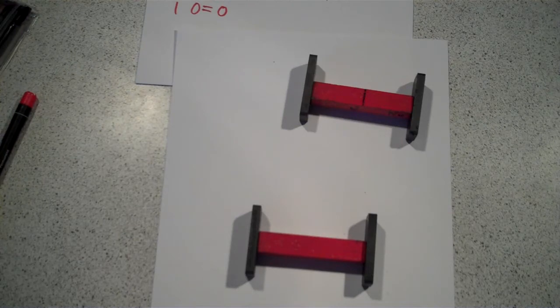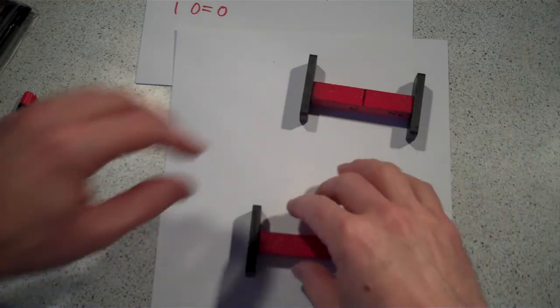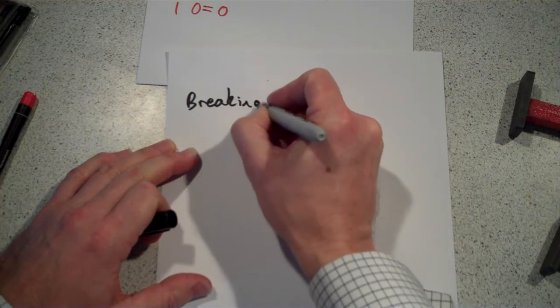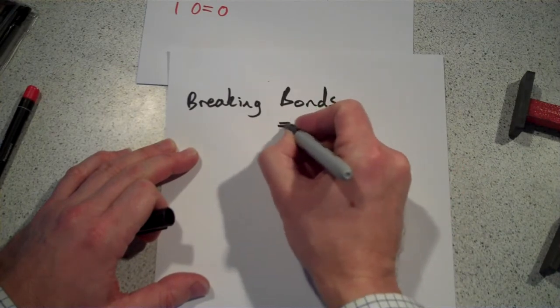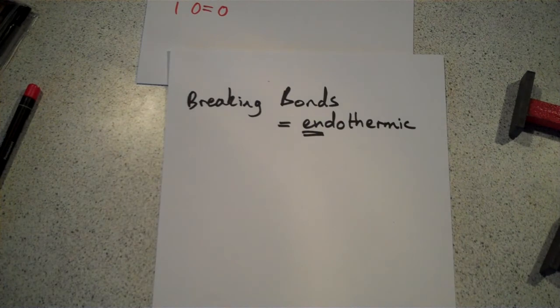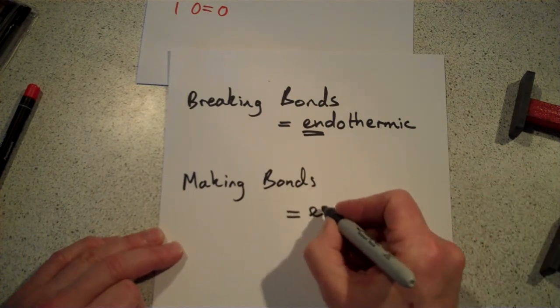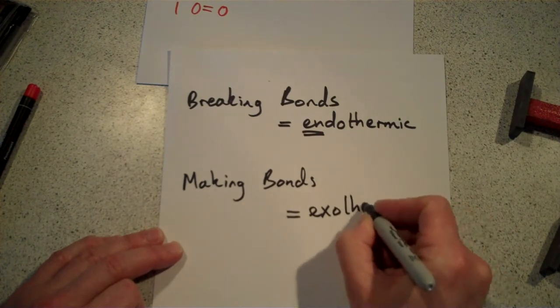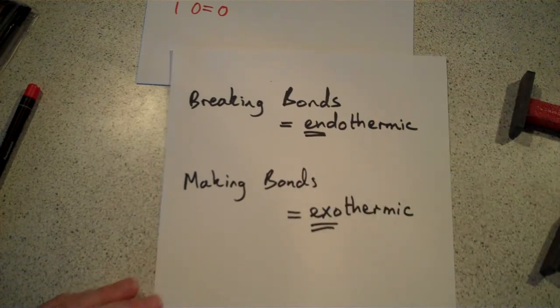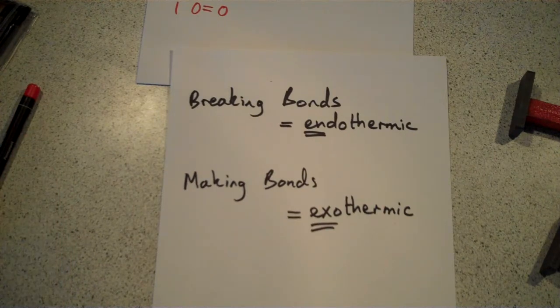So, breaking bonds, if you remember, I had to put energy in to pull things apart. Making bonds, I get energy out. And that's really important. So important that we better make a permanent note of that. Breaking bonds, which is what you do at the start, equals endothermic. Remember, endo is like entrance. It's what goes in. Whereas making bonds, you get energy out. It's exothermic. And energy out, you think of the word exit, exothermic. Exo, out. Thermic means heat. Endo, entrance, heat.